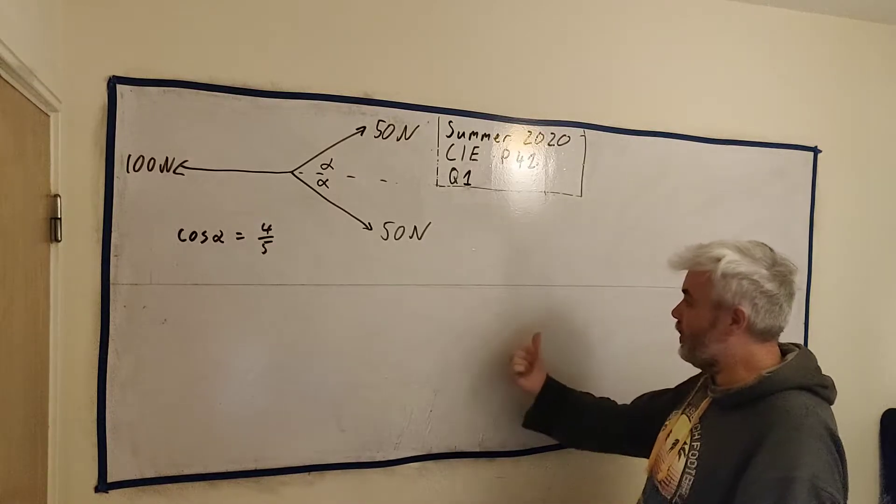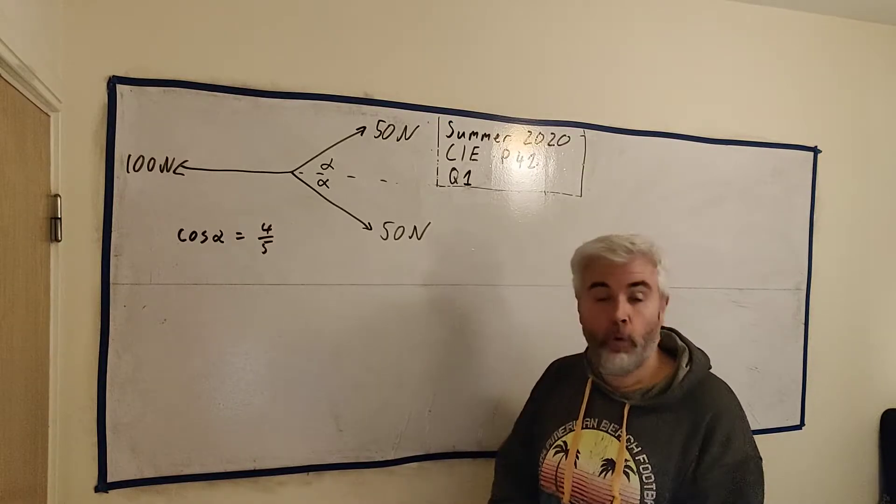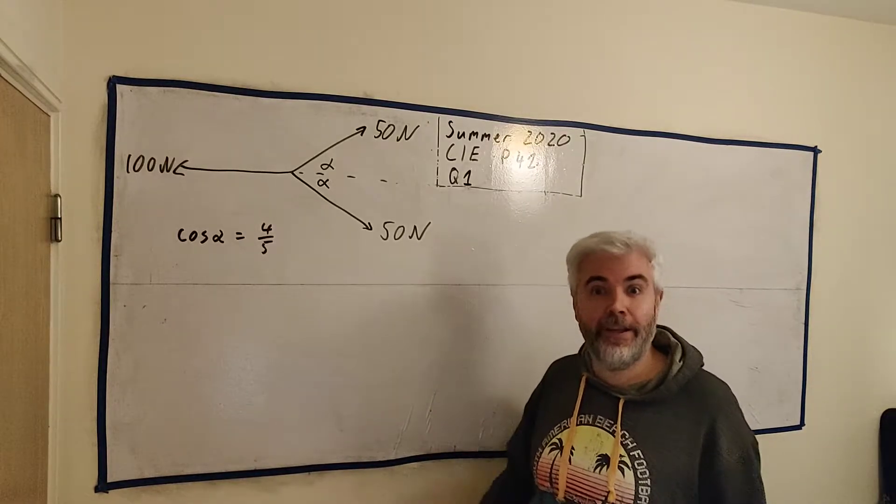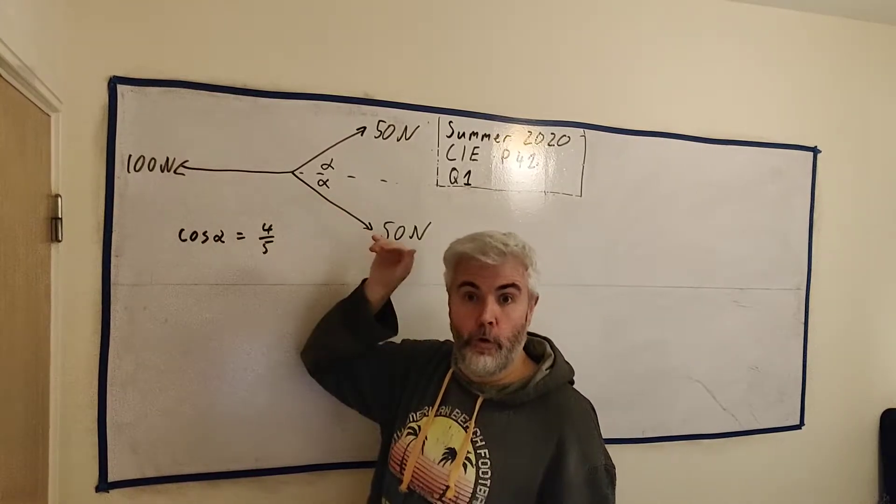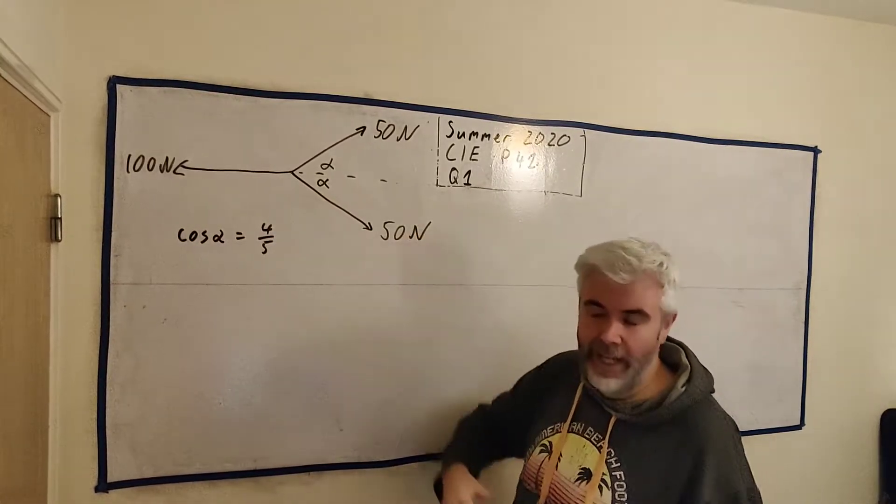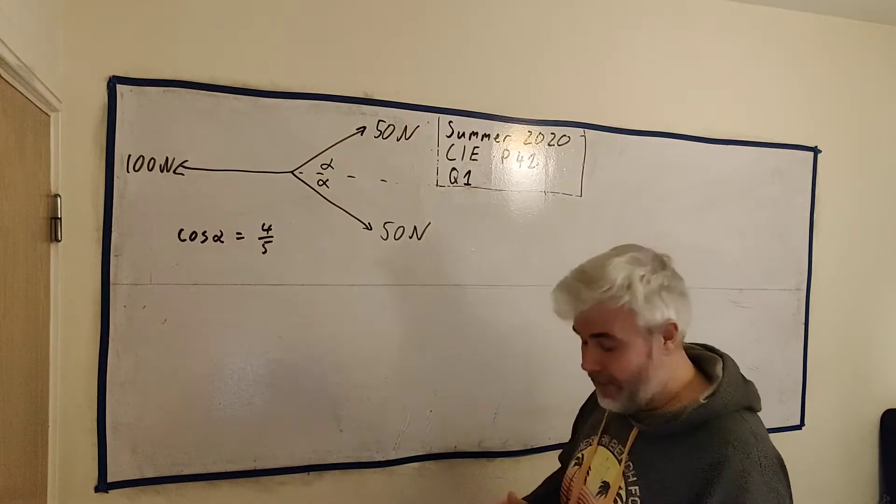Two forces going to the right, we add them together and get one bigger force. One force up, one force down, they take away from each other. So let's break them up. This 100 newton force to the left, it's already in a nice flat x direction or minus x direction so we leave that alone.